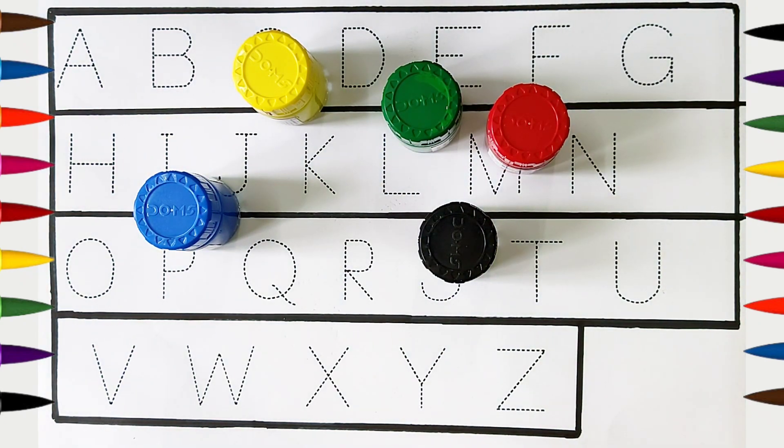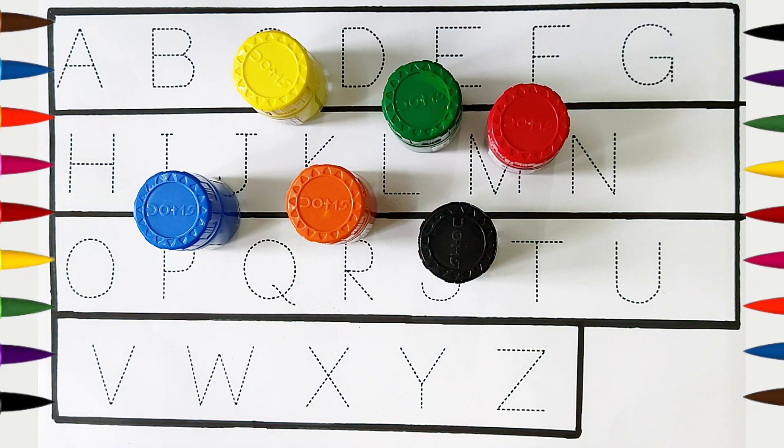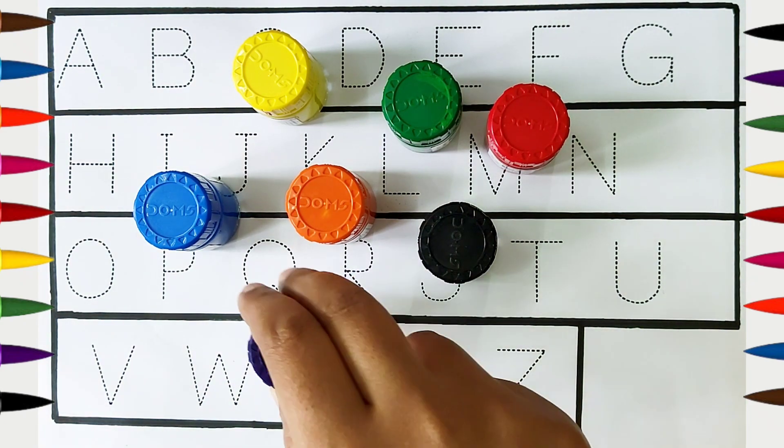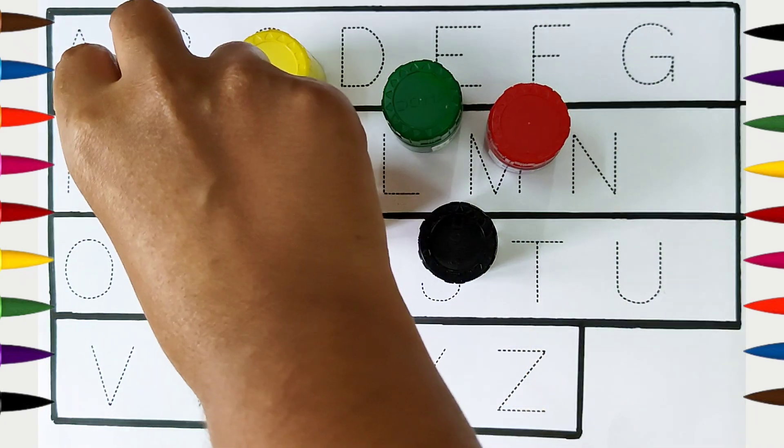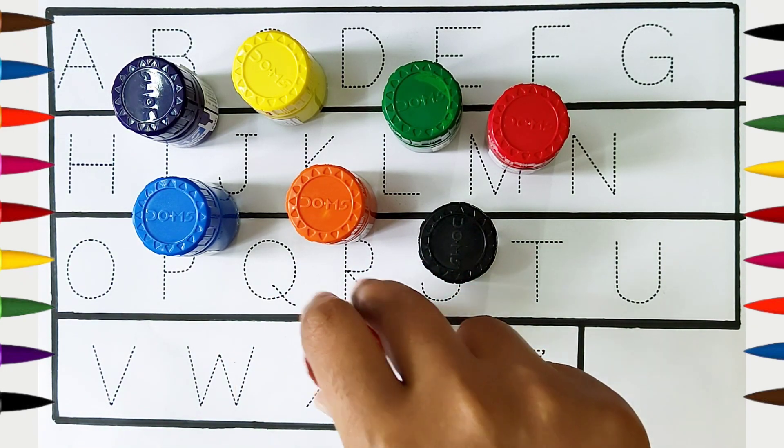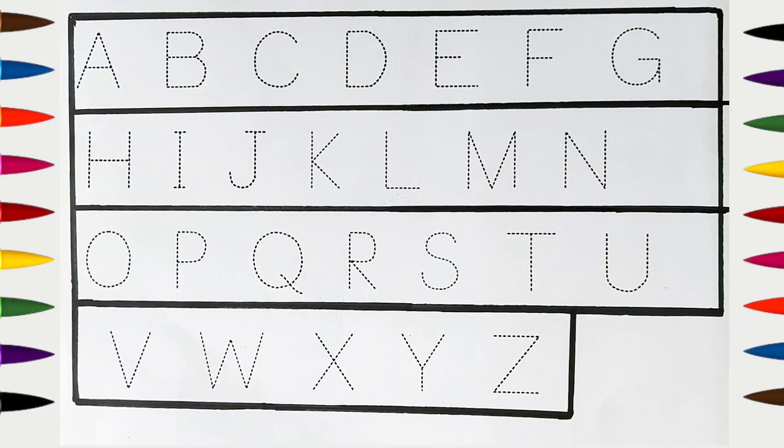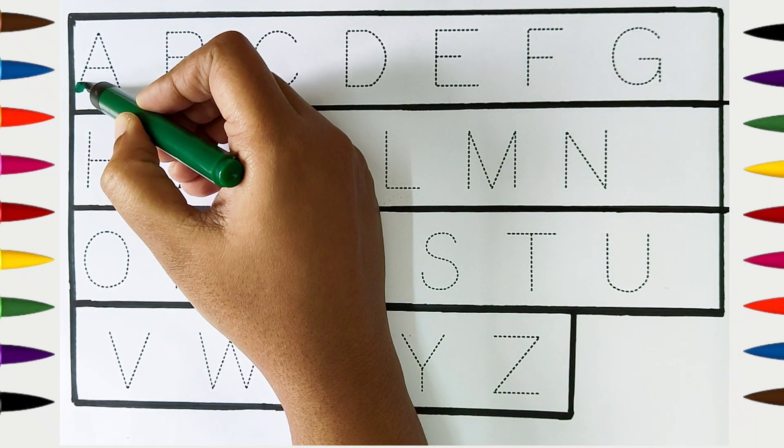Orange color, violet color, brown color. Hi kids, today we can learn the alphabets from A to Z. Let's begin!